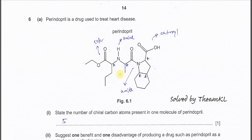Question 6a. Perindopril is the drug used to treat heart disease. This is its structure. Part 1: state the number of chiral carbons in this molecule.